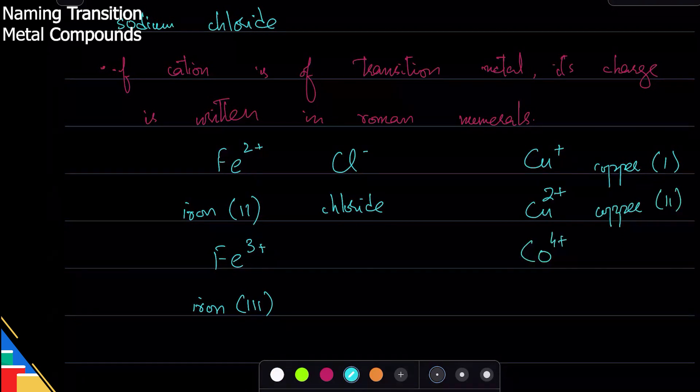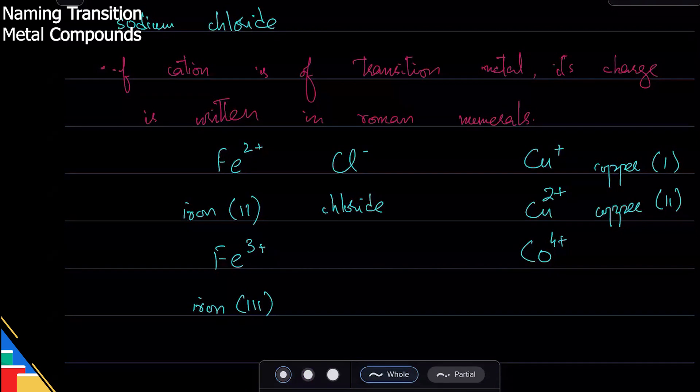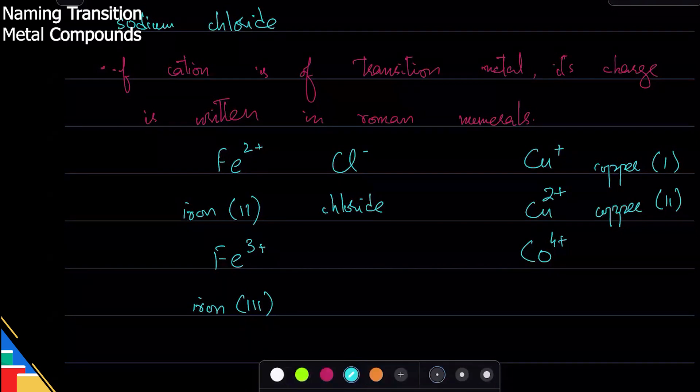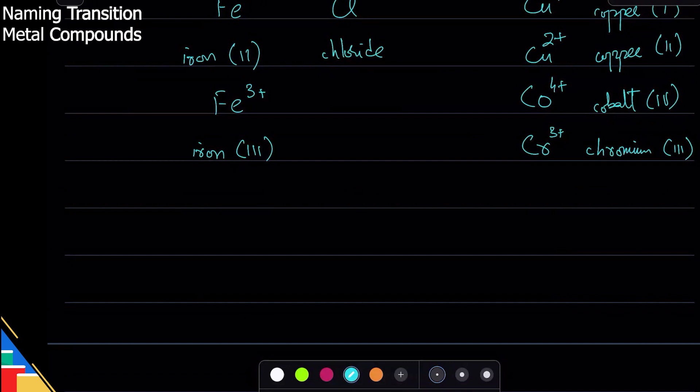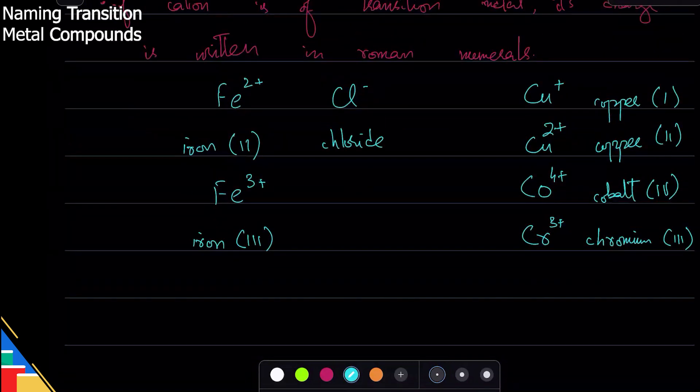This one is cobalt(IV). So Co is cobalt—again, in the periodic table that you get in the exam, all the names are written, so you don't need to memorize any names. This is cobalt with four plus charge, so we'll say cobalt(IV) and we write the Roman numeral. Similarly, this one you might see in paper 4 ATP—this is chromium(V).